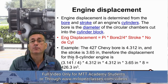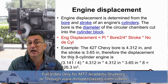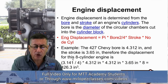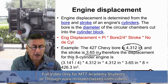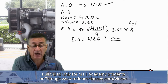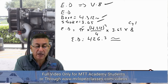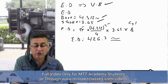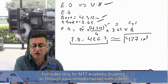Here is an example from your book. We are going to calculate the engine displacement for the famous 427 V8 Chevy. We know the bore is 4.312 inches and the stroke is 3.65 inches. The formula for engine displacement is pi times bore squared divided by 4, times the stroke, times the number of cylinders. The result is 426.3 cubic inches, which you can approximate to 427 — the famous 427 cubic inches.